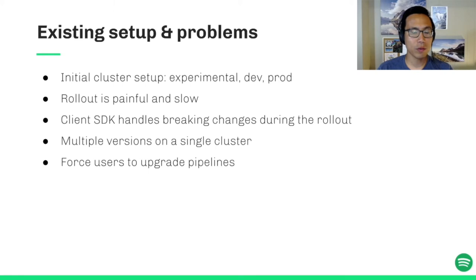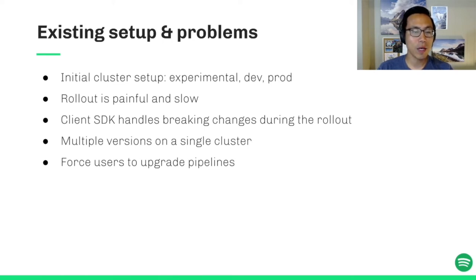To support the rollout, sometimes we needed to handle breaking changes in our client SDK or install multiple versions of Kubeflow services on the cluster for backward compatibility. During the final production rollout, we were under pressure to complete the upgrade as quickly as possible to minimize user interruption. Even worse, this approach forced users to upgrade their ML pipelines when we upgraded the infrastructure, so teams couldn't choose to migrate based on their own schedules.